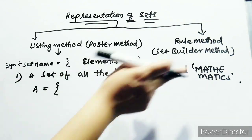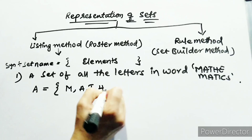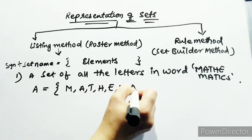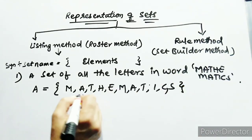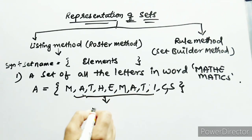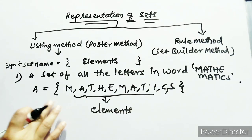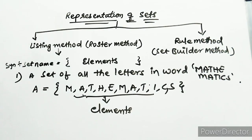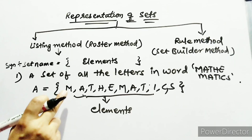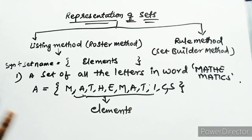A set of all letters in MATHEMATICS: the letters are M, A, T, H, E, M, A, T, I, C, S. These are called elements, and they must be enclosed in curly braces. The set name can be any alphabet, and all elements must be separated by commas.